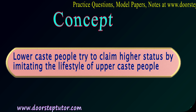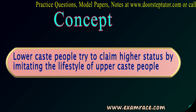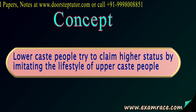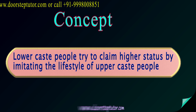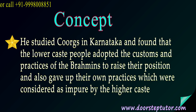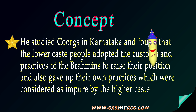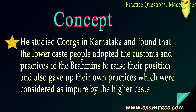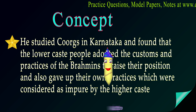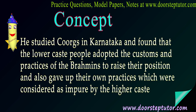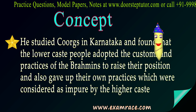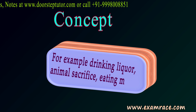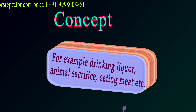Lower caste people try to claim higher status by imitating the lifestyle of upper caste people. He studied Coorgs in Karnataka and found that the lower caste people adopted the customs and practices of the Brahmins — that is the higher caste people — to raise their position in society, and they also gave up their own practices which were considered impure by the higher caste. Examples of those impure practices include drinking liquor, animal sacrifice, and eating meat.